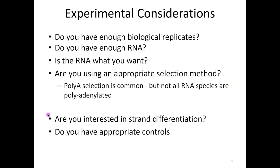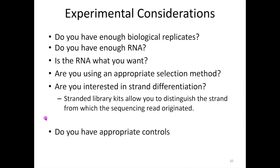You need to think about your selection methods. It's very common to do a poly-A selection, but there are some non-coding RNA species that actually don't have a poly-A tail. So you need to consider if the selection method you're using is appropriate to find what you want. You also need to consider if you're interested in whether your RNA originates from the coding strand or the non-coding strand. The non-coding strand can help you understand regulation from antisense RNAs. You can get stranded library kits that allow you to distinguish whether your reads come from the coding or non-coding strand of your cDNA.